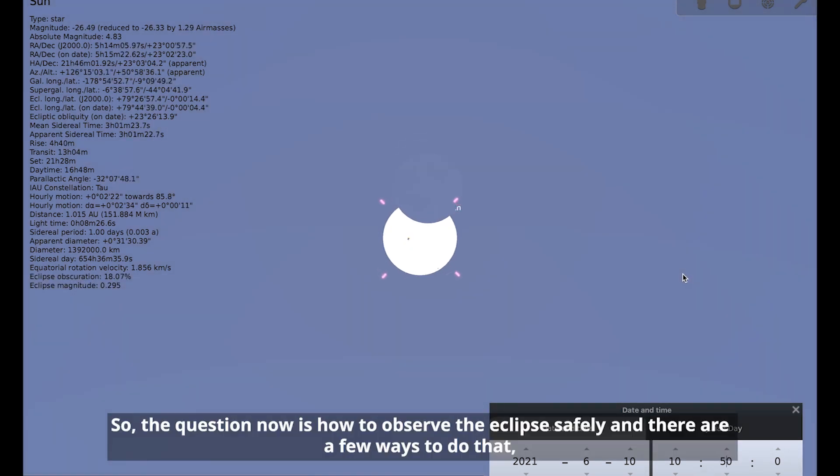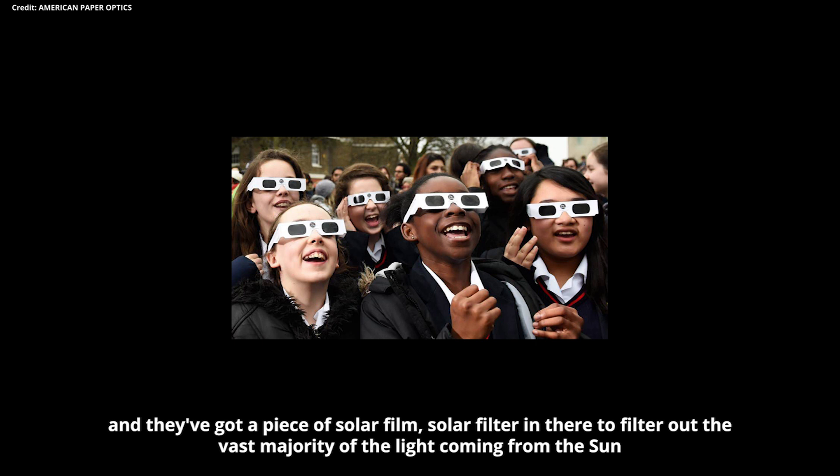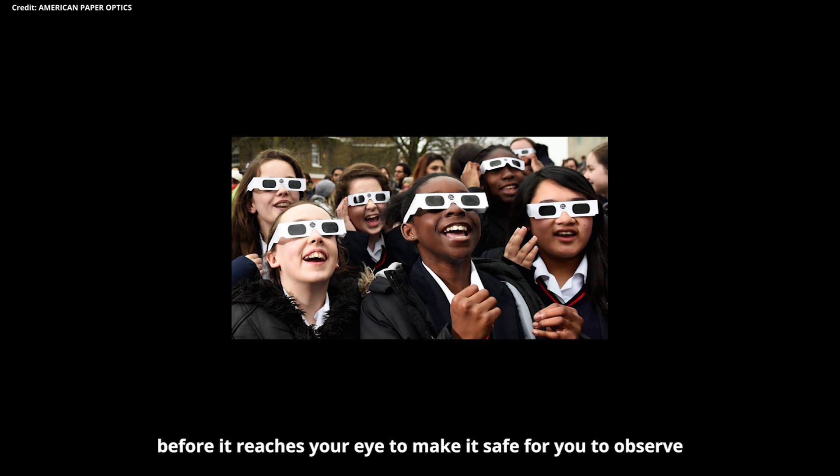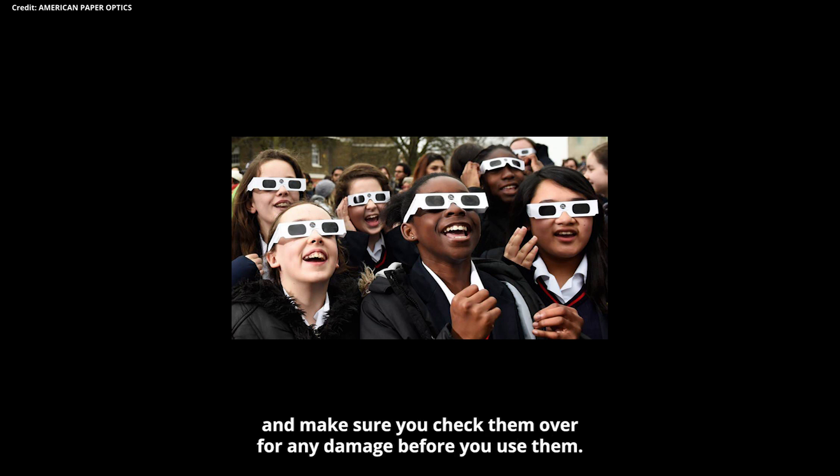So the question now is how to observe the eclipse safely. And there are a few ways to do that. One way is to buy a pair of eclipse glasses, which are like a pair of cardboard glasses that you put over your eyes and they've got a piece of solar film, solar filter in there to filter out the vast majority of the light coming from the sun before it reaches your eye to make it safe for you to observe. If you want to buy a pair of those, make sure you buy them from somebody that's reputable and make sure you check them over for any damage before you use them.